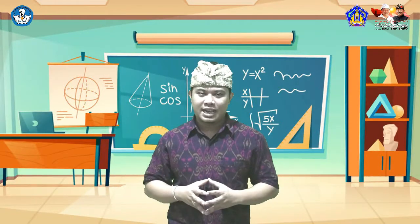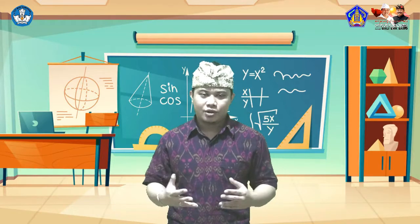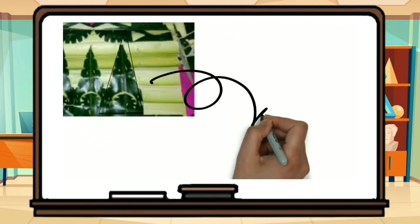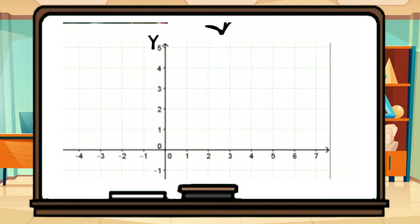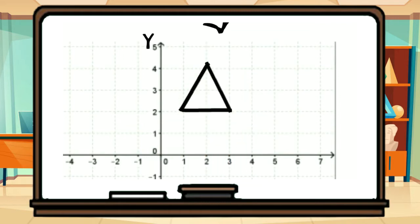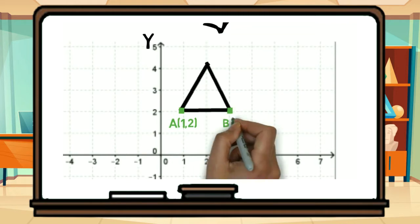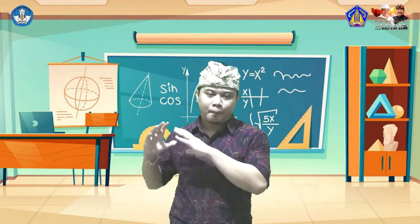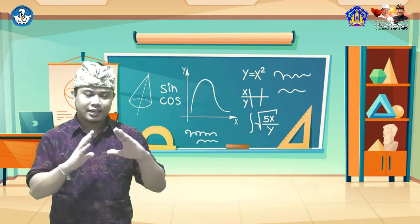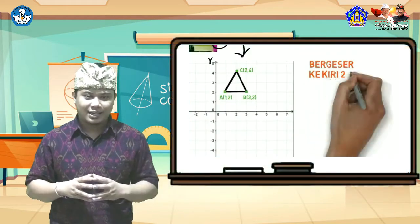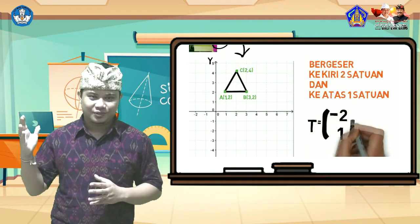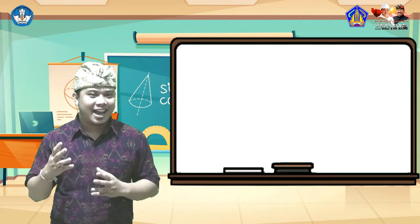Setelah tadi kita menemukan bentuk umum dari translasi atau pergeseran, kini Bli Agus akan mengajak sahabat untuk menerapkannya pada pola ceriken, di mana di sini Bli Agus punya pola ceriken berbentuk segitiga. Jika segitiga ini ditempatkan di koordinat Cartesius, segitiga ini akan memiliki 3 buah titik, yaitu titik A di (1,2), titik B di (3,2), dan titik C di (2,4). Pola segitiga ini akan kita geser atau translasi ke arah kiri 2 satuan dan atas 1 satuan, atau dengan kata lain menggunakan matriks translasi (-2,1). Kira-kira bagaimana bayangan dari pola segitiga ini?